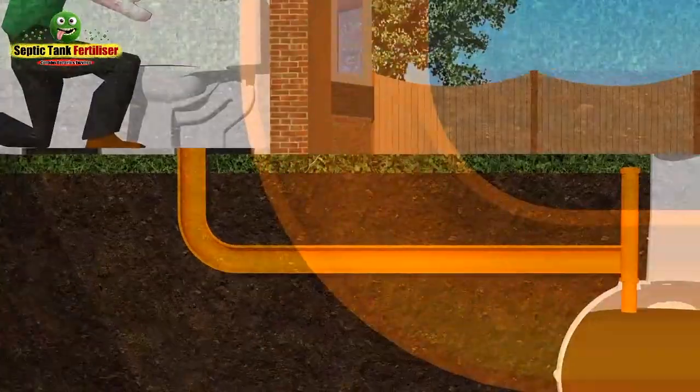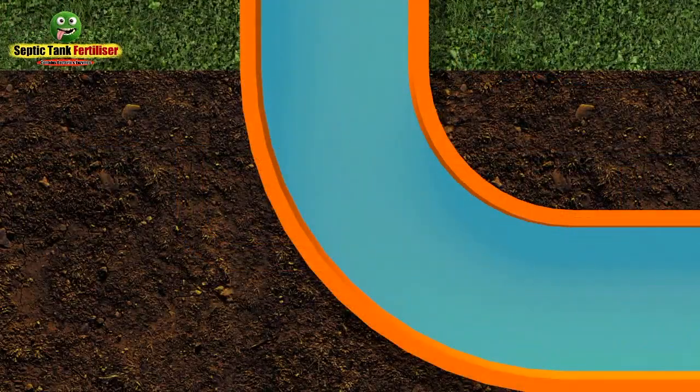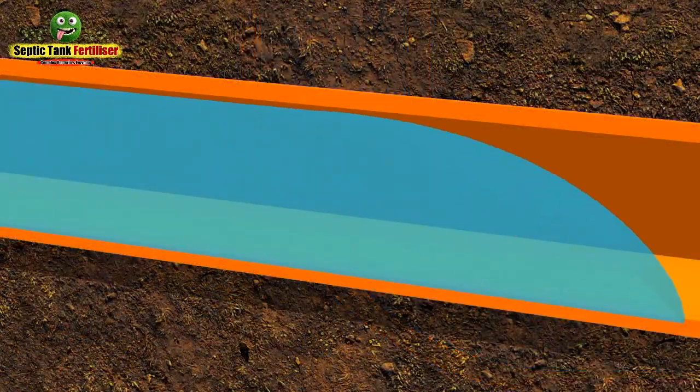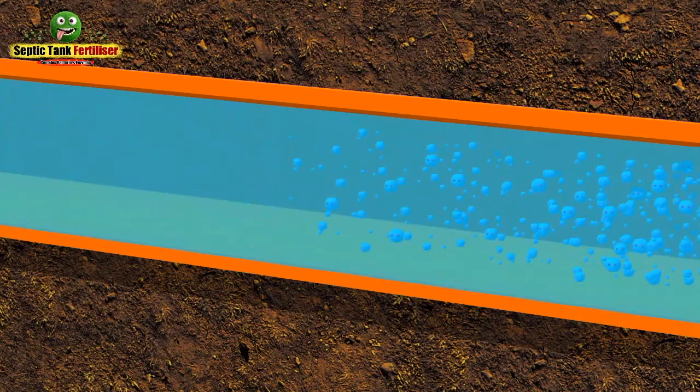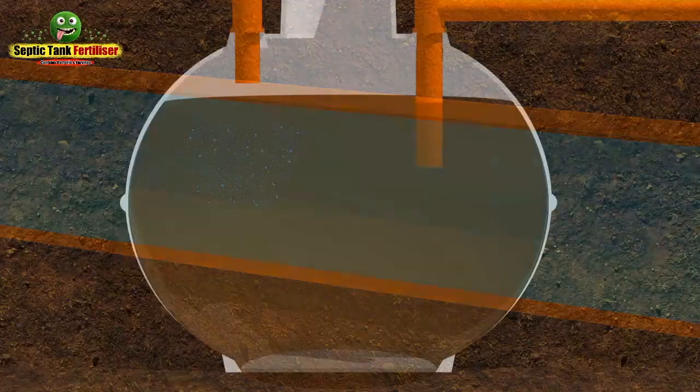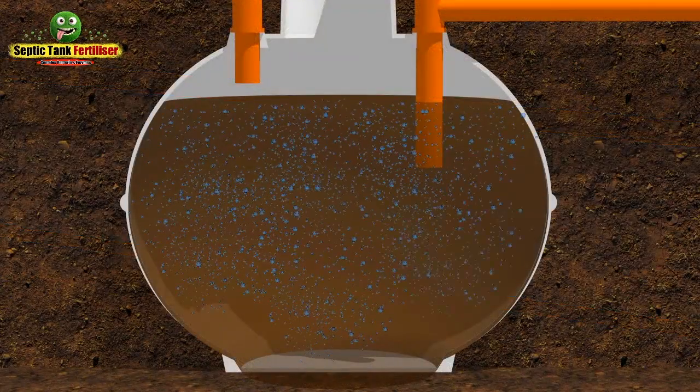The organic bacteria will then leave the toilet and start making their way down the pipes that lead to the septic tank. And as that bacteria travels through the pipes, it will remove the germs and clean them as it goes.